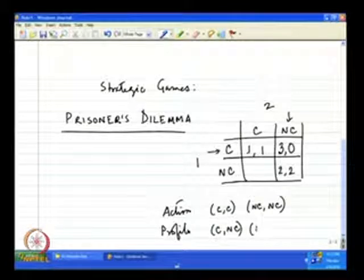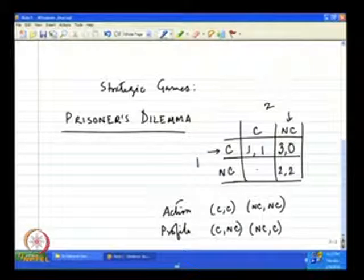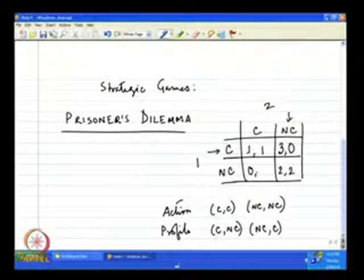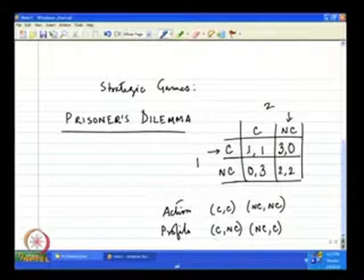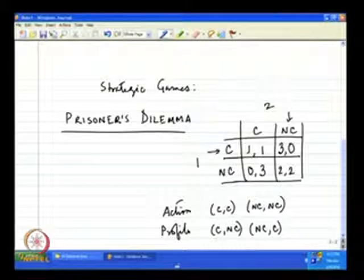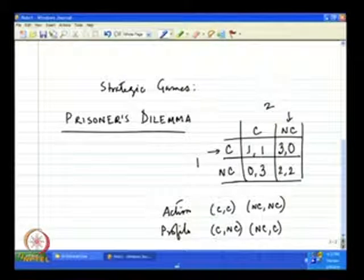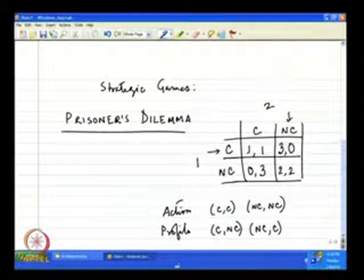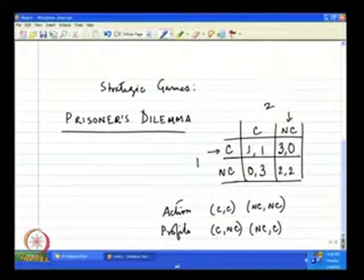The opposite is action profile NC,C: player 1 does not confess and gets payoff 0, while player 2 confesses and implicates player 1, so player 2 is freed — the best outcome for player 2. There are four payoff numbers: 0 is jail for 5 years (worst), 1 is jail for 3 years (second worst), 2 is jail for 1 year (second best), and 3 is no jail at all (best). This is the typical prisoner's dilemma game.